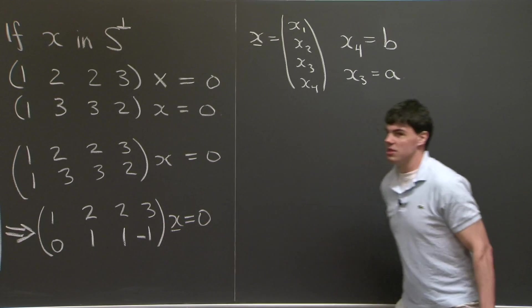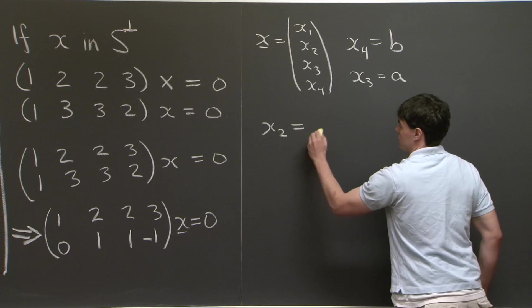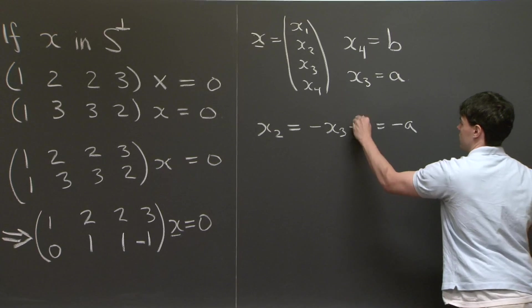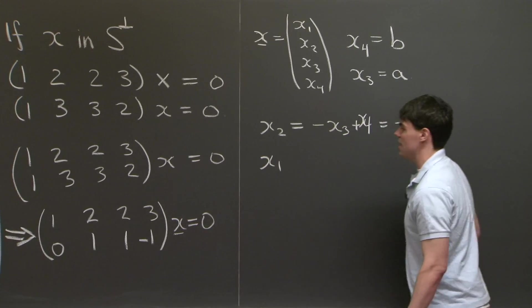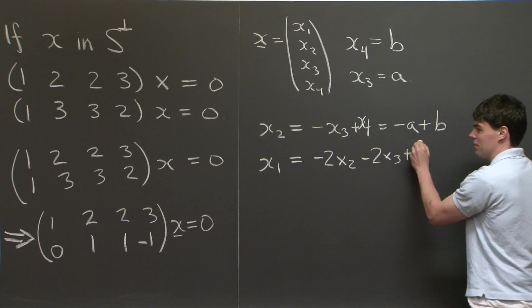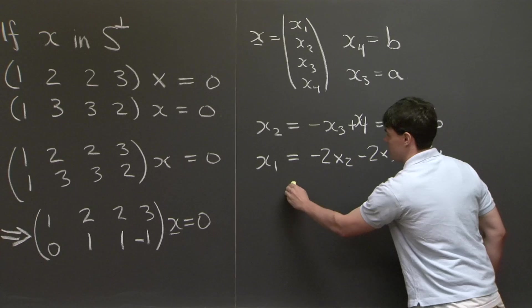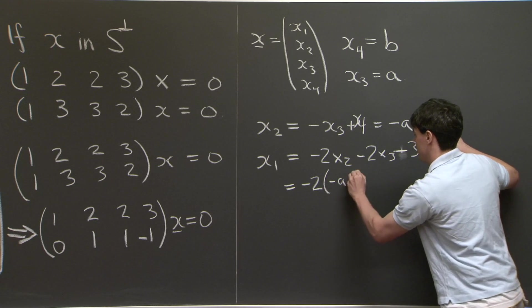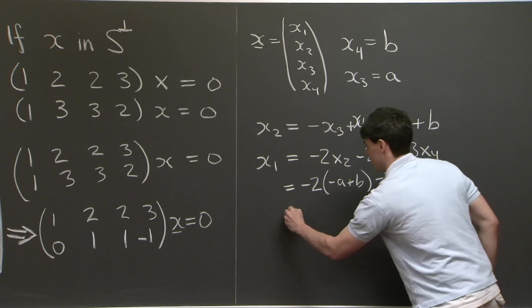Now, what we do is we take a look at these two equations, and this bottom equation will say that x2 is equal to negative x3 plus x4, which is going to equal negative a plus b.